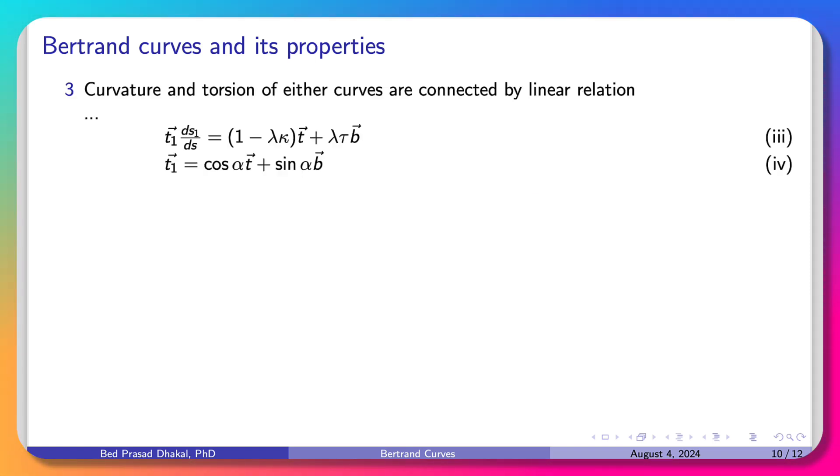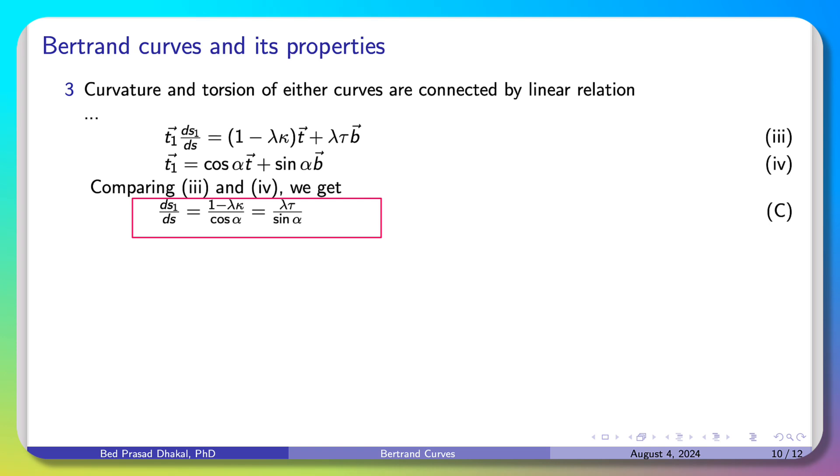Now, this equation is the second one. T1 represents the tangent vector. The vector relation ds1 by ds equals 1 minus λκ by cos α equal to λτ by sin α. This is equation C.